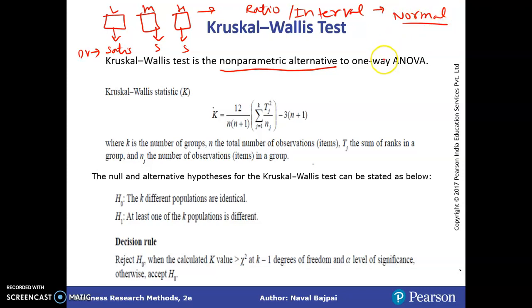So sometimes these conditions are not met, sometimes we will deal with ordinal data, ranking data, or sometimes we do not have normal data. In such conditions, if you want to compare the groups, you can go for the Kruskal-Wallis test instead of doing one-way ANOVA.